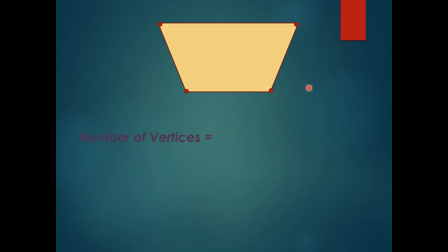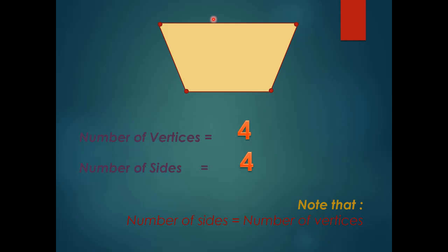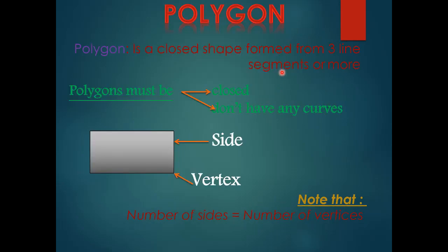Let's see together this exercise. We have vertex, vertex, vertex, vertex, and vertex — how many vertices? Four. And how many sides? One, two, three, four — four sides. Any polygon, don't forget — the number of sides equals the number of vertices. Any polygon: number of sides equals number of vertices.